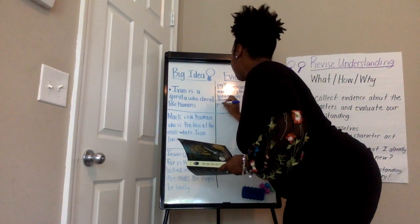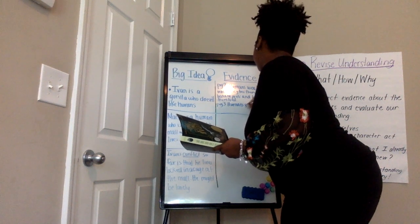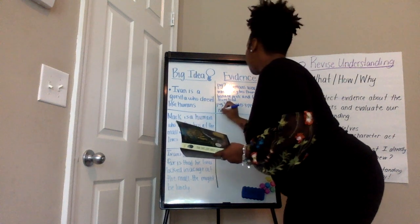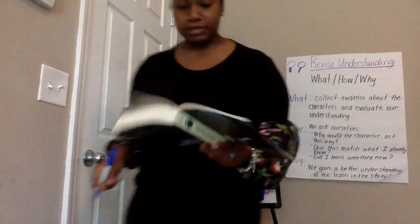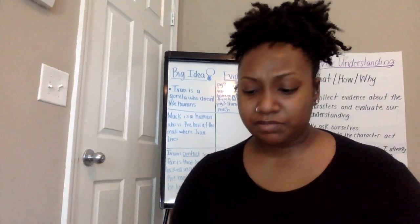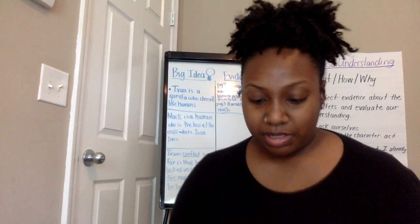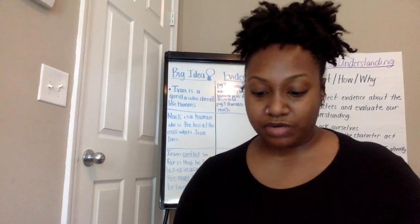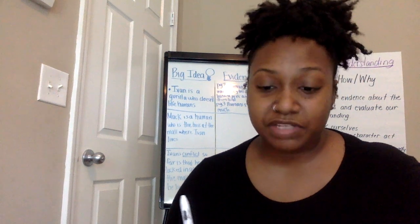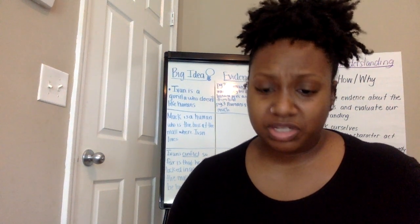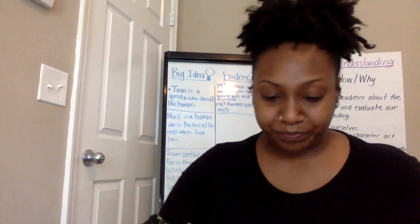Make sure you're copying what I'm copying: 'Humans speak too much.' This text evidence is also found directly in the book, so if you can't see my board, you can find it right on those page numbers. 'It took me some time to recognize all those human sounds, to weave words into things. But I was patient. Gorillas are as patient as stones. Humans, not so much.' I'm getting some clues about Ivan's perspective — he thinks humans waste words and talk too much. I know that Ivan does not like humans.